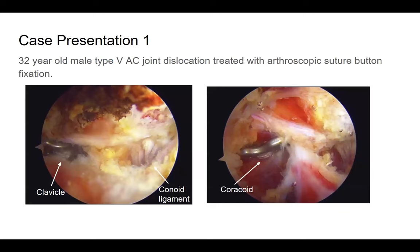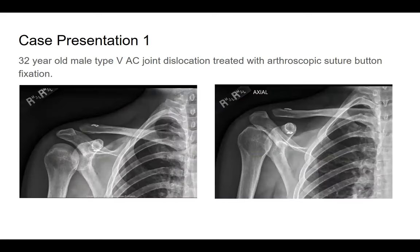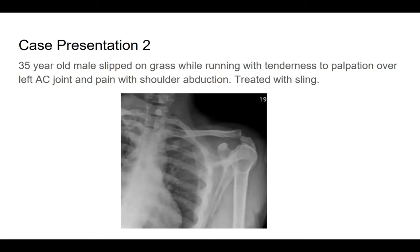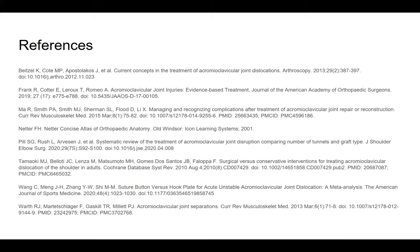Going back to the patient: the 32-year-old male with a type 5 AC joint dislocation was treated with arthroscopic suture button fixation. Intraoperative photos show suture button placement, and immediate post-op films show good reduction. A second case is also presented — a male in his 30s who slipped on grass while running, with slightly less displacement, was treated conservatively with a sling. Treatment depends on attending preference, patient pain level, activity level, and amount of closable reduction achievable.